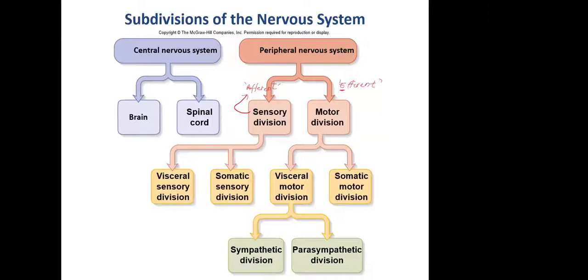Now we can divide the motor division into two components: visceral and somatic. The motor division is divided into the visceral motor division and the somatic motor division. Let's take a moment and think about what visceral means. Visceral refers to internal organs. Somatic refers to skeletal muscles.